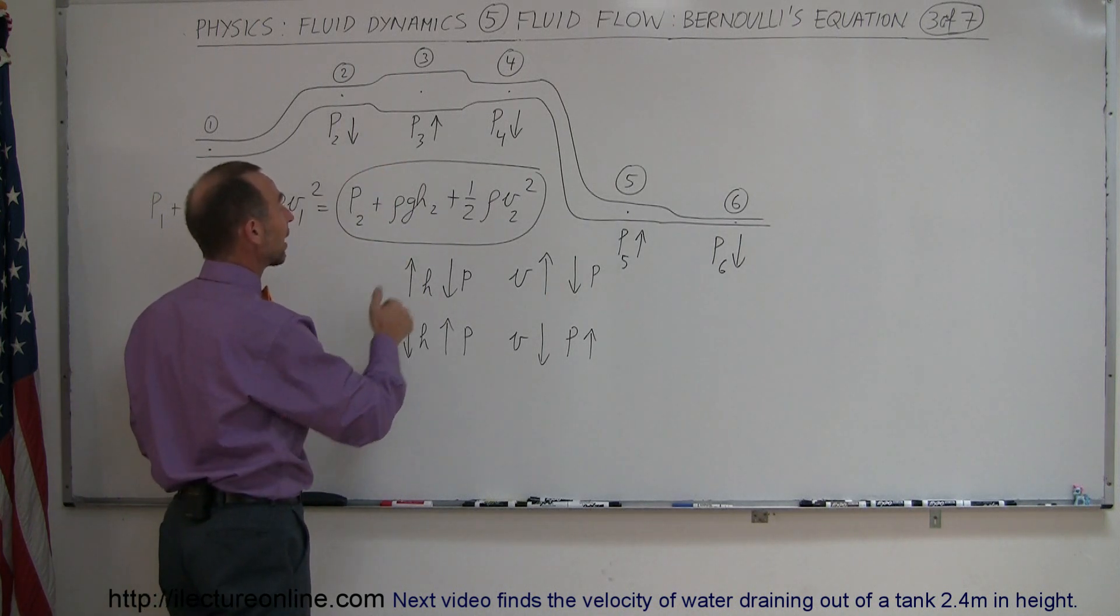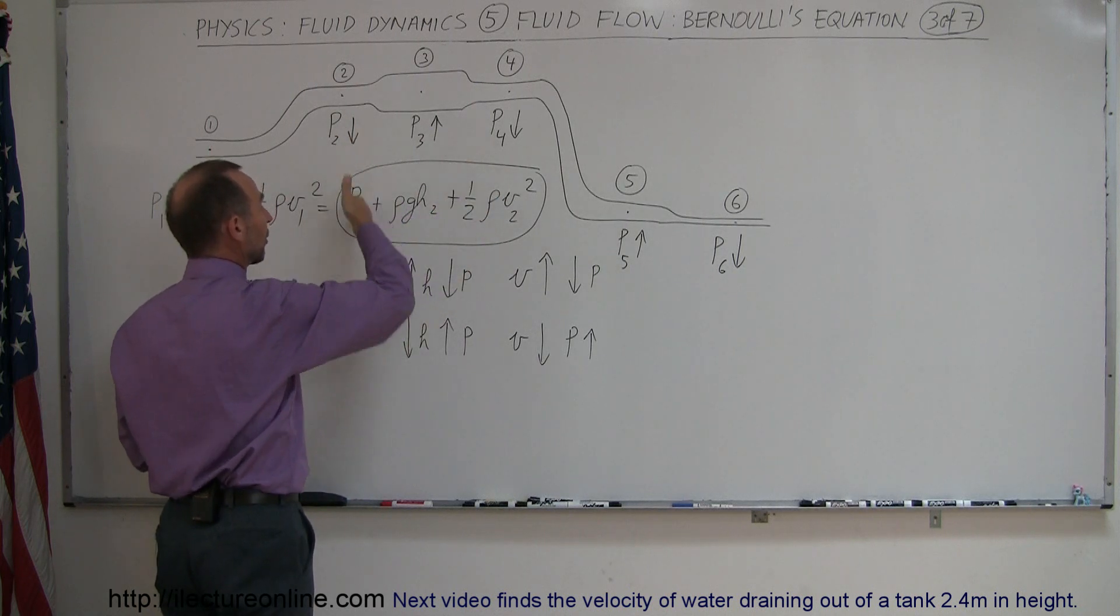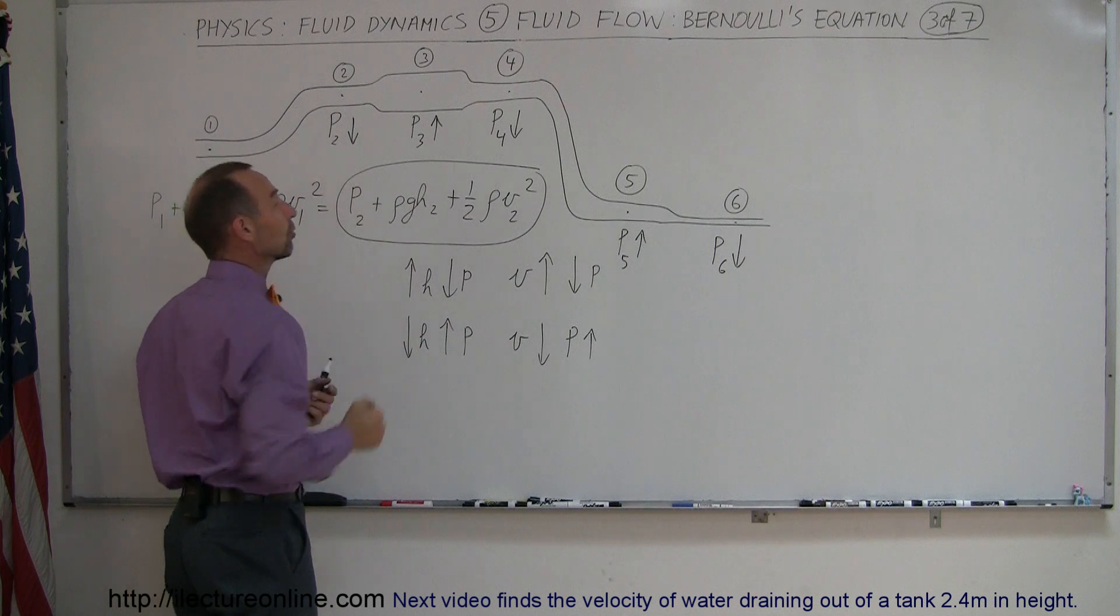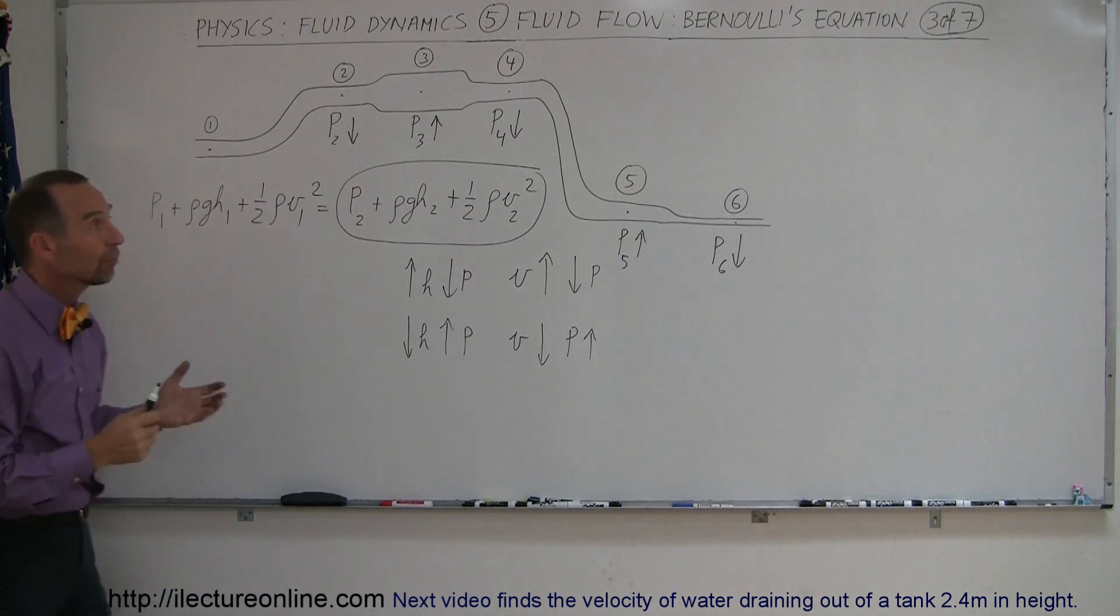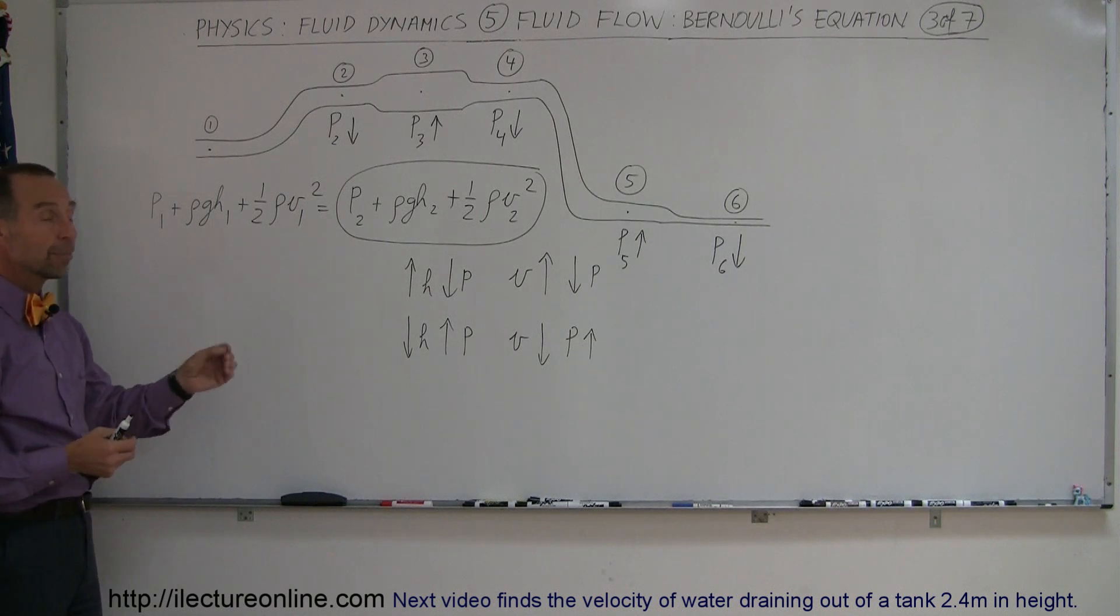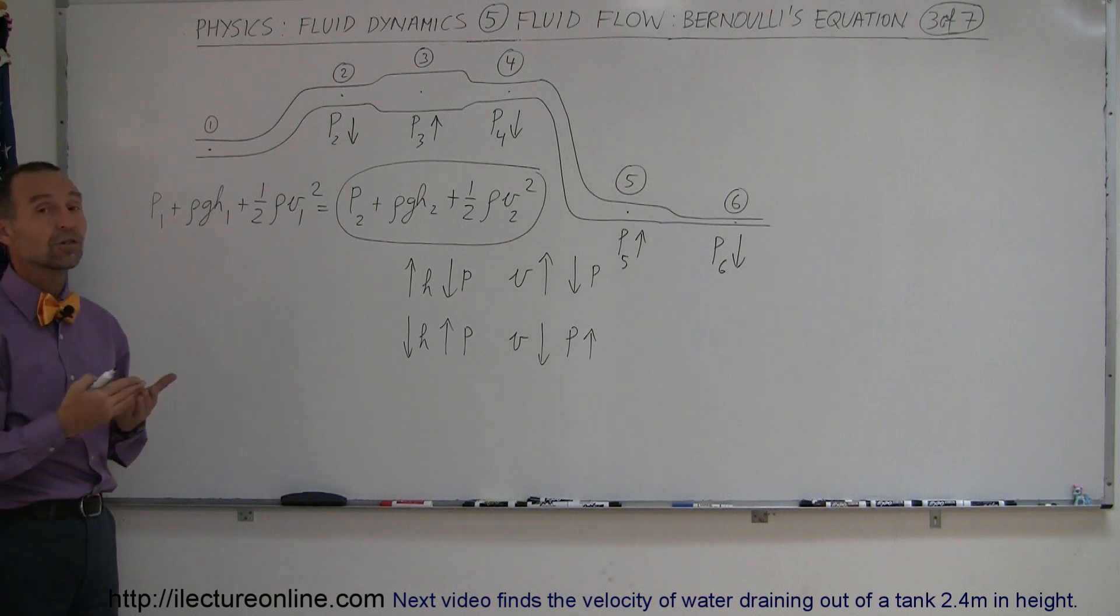So we took one at a time. Height goes up, pressure goes down. Velocity goes up, pressure goes down. Height goes down, pressure goes up. Velocity goes down, pressure goes up. It's as simple as that. So hopefully that will give you a better perspective on how to look at Bernoulli's equation. Now on the next examples, we're actually going to work out some real good examples of how to utilize Bernoulli's equation for different things.